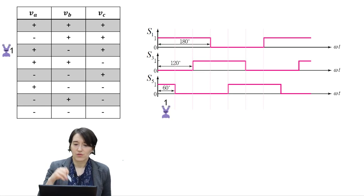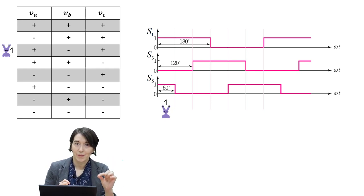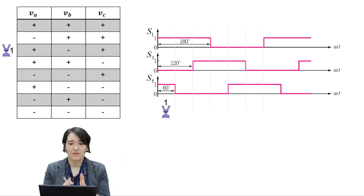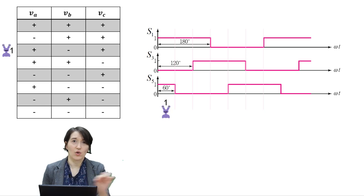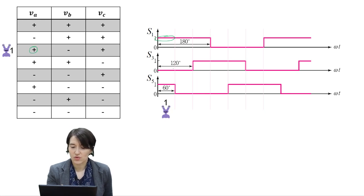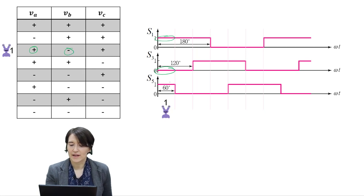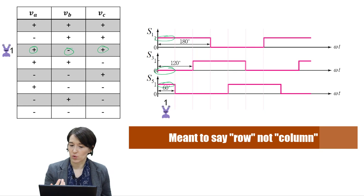We're going to start with the very first region. In region one, S1 is high — that's a positive polarity. S3 is 0, so negative. And S5, which corresponds to the C pole, is positive. So this is the column in the table that it corresponds to.